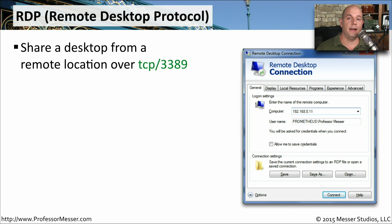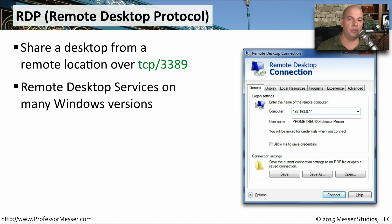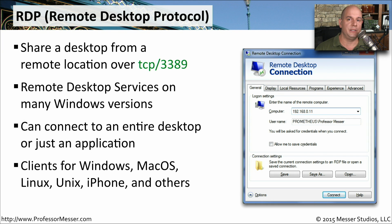If you're working with many devices or in a help desk role, you're probably going to use RDP — the Remote Desktop Protocol. It uses TCP port 3389 to share information on another device. This is called Remote Desktop Services on many versions of Windows, and it allows you to share the entire screen of a remote device, or just share an application still running on that remote device so you can view it on your desktop. Many operating systems support RDP clients and servers, including Windows, Mac OS, Linux, Unix, iPhone, Android, and many others.